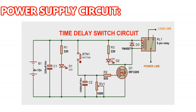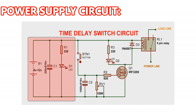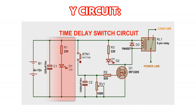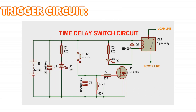The power supply circuit consists of the 9-volt source from the battery, the 220uF electrolytic capacitor, and the light indicator in series with the 220-ohm resistor, which shows the presence of power in the system. The trigger circuit consists of the push button only. Once the button is pushed, the circuit instantly gets triggered to delay the load in either switching on or off.